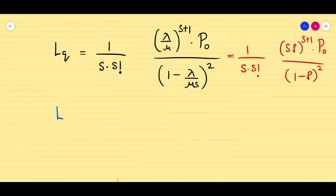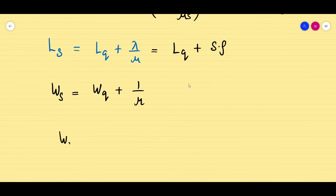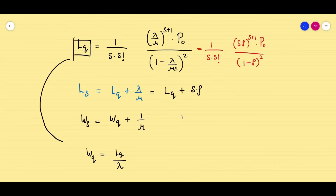Once Lq is found, we find Ls. Ls equals Lq plus lambda/mu, which can also be written as Lq plus s·rho. Next, Ws equals Wq plus 1/mu. And Wq equals Lq divided by lambda. So the key point is: if you find Lq, you can easily find Wq; from Wq you can find Ws; and using Lq you can find Ls. Everything is connected with Lq, so we must find Lq correctly.